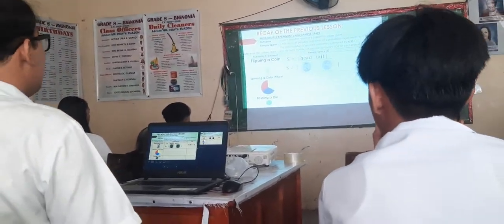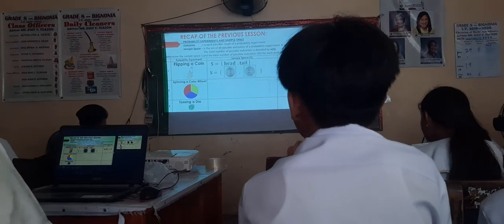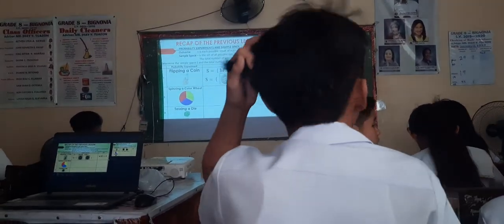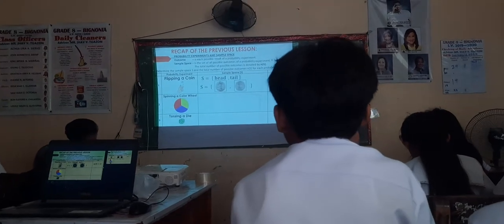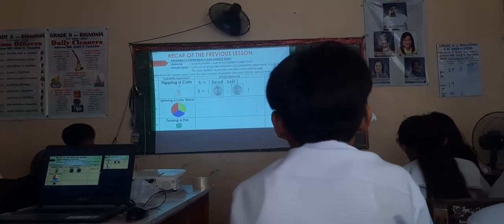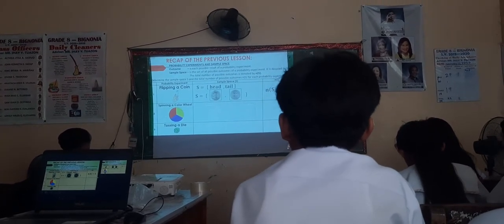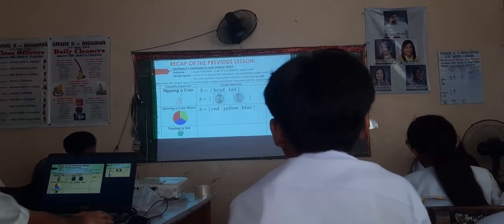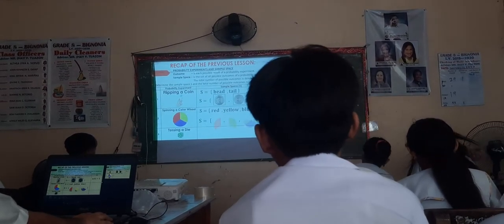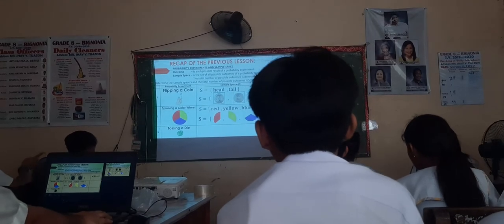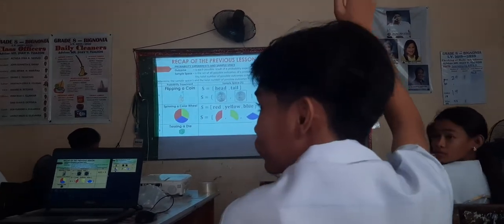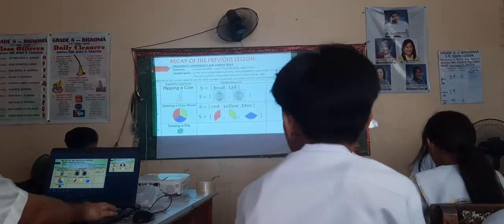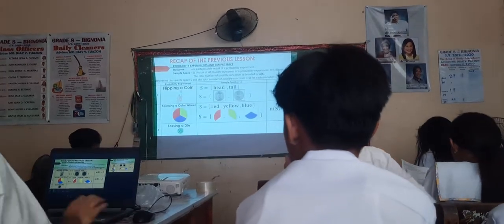Let's have the next probability experiment — spinning a color wheel. S is equal to the set containing red, yellow, and blue. What is N(S)? N(S) is equal to 3. Very good. Last probability experiment — tossing a die. S is equal to the set containing 1, 2, 3, 4, 5, 6.